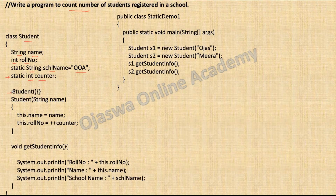We have a default constructor. It is good practice to write a default constructor even though you are not using it, to avoid future errors. We have a parameterized constructor that accepts a student name from the object created. We are also assigning the student role number, but we are going to auto-generate the role number using the static variable counter.